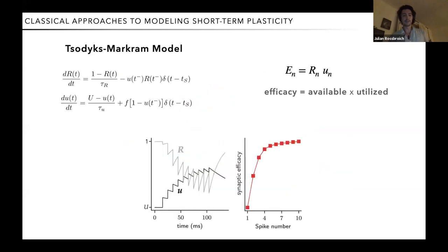So if you want to describe synaptic plasticity or short-term plasticity, the traditional approach would be something like the Tsodyks-Markram model, which is heavily used throughout the field. And in essence, what it tries to do is describe the efficacy of a synaptic spike as the product of the available and the utilized resources at a synapse.